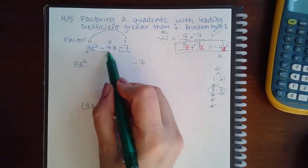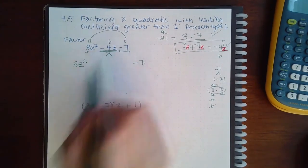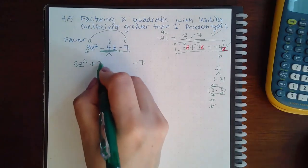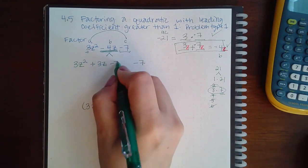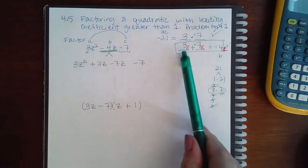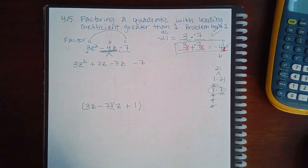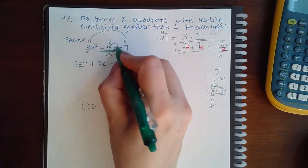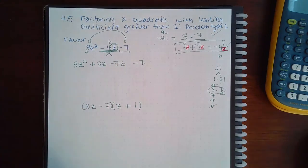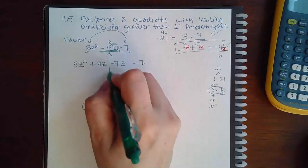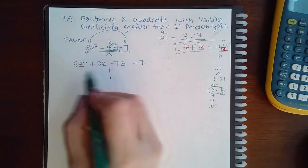I'm gonna keep my 3z² and my minus 7 on the end. All I'm gonna do is split up this minus 4z. I'm gonna use positive 3z and negative 7z since those are the numbers found over here, and I do have to keep the same variable that's here on both of those numbers. Now it's four terms, which means I can factor by grouping.